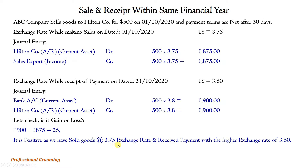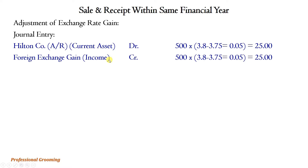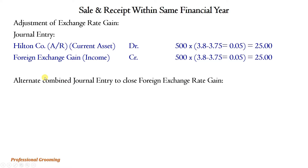Checking gain or loss: 1,900 minus 1,875 equals 25 — positive, so it is a gain. We sold goods at exchange rate 3.75 and received payment at the higher rate of 3.8. The journal entry for exchange rate gain: debit Hilton company accounts receivable $500 × (3.8 − 3.75) = 0.05 × 500 = 25; credit foreign exchange gain (income account) 25.